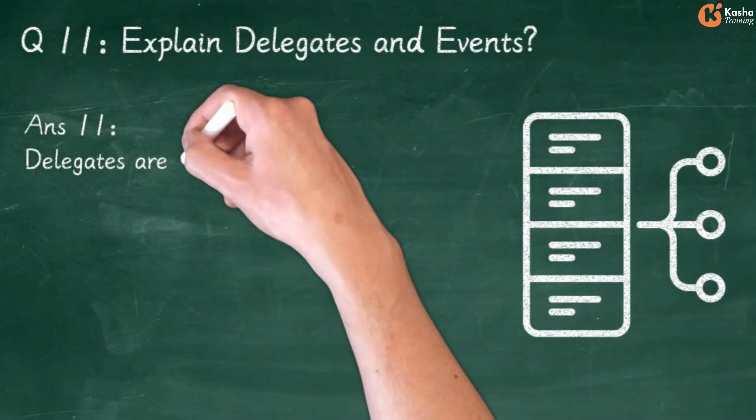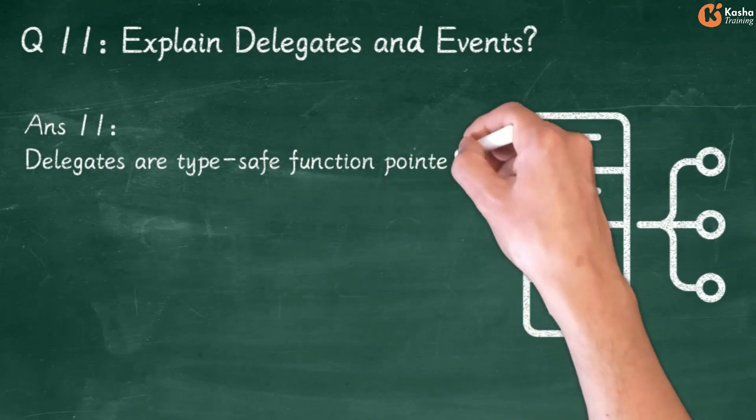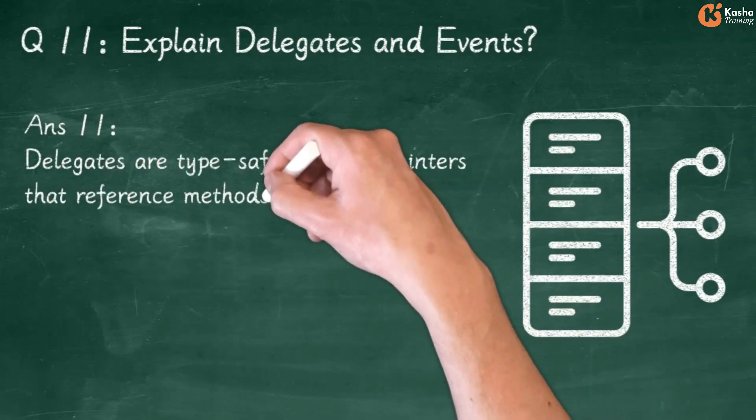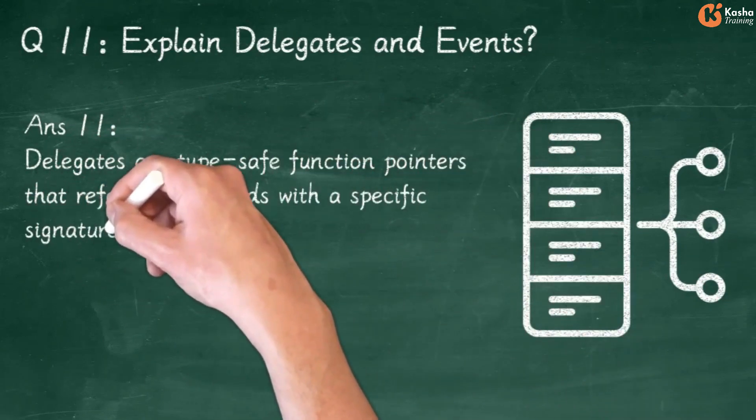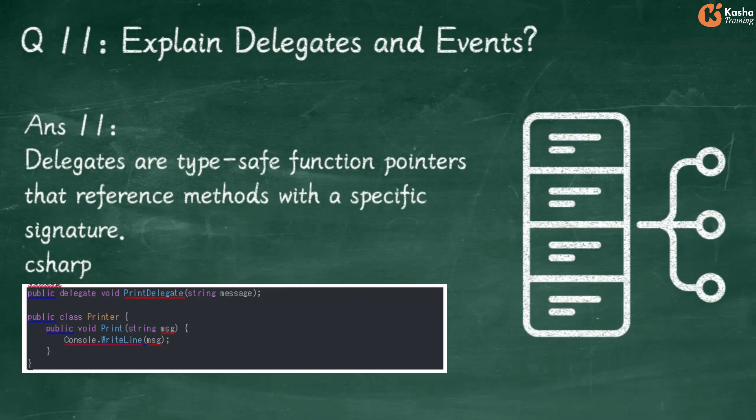Answer 11: Delegates are type-safe function pointers that reference methods with a specific signature. In C#: Public Delegate Void PrintDelegate with String Message. Public Class Printer has Public Void Print with String MSG and Console.WriteLine(MSG).